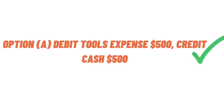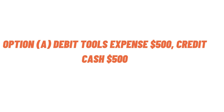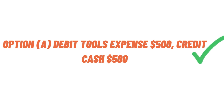Option B is incorrect because we have to debit tool expense instead of fixed asset. Option C is incorrect because we have to debit tool expense instead of fixed asset. Option D is also not correct. We have to debit tool expense with $500 instead of $1,000. So option A is correct.